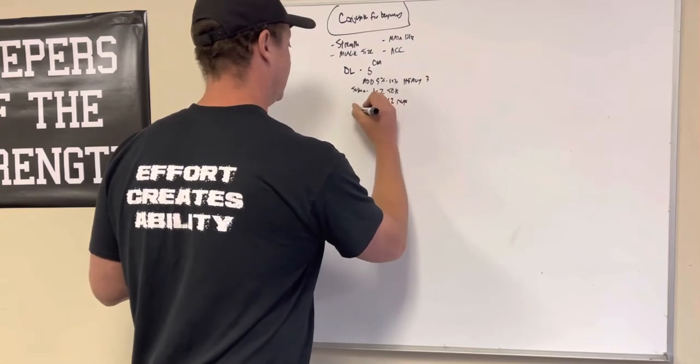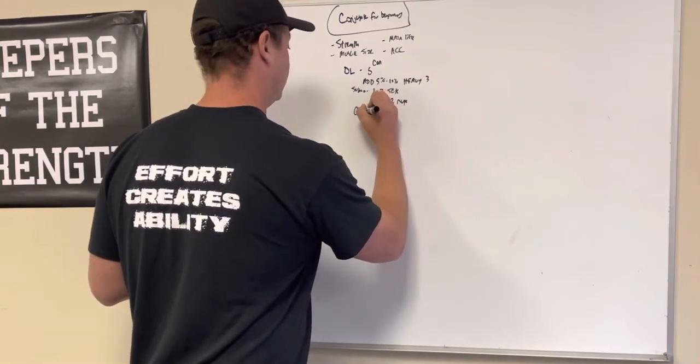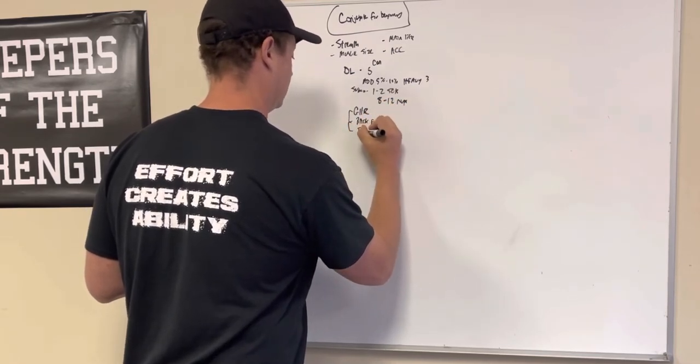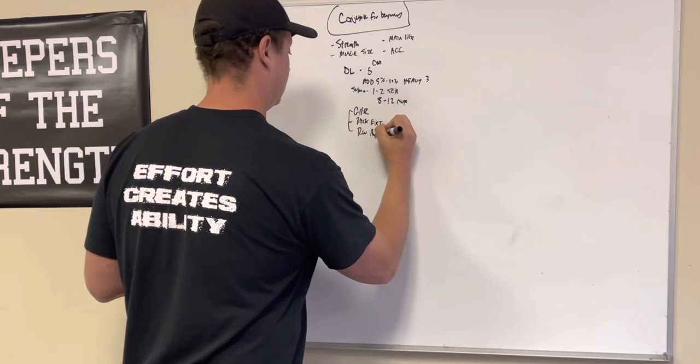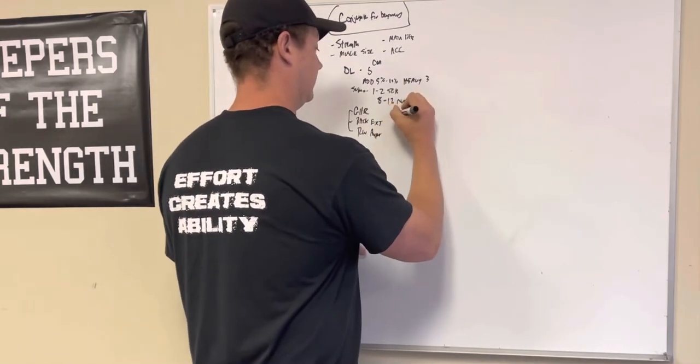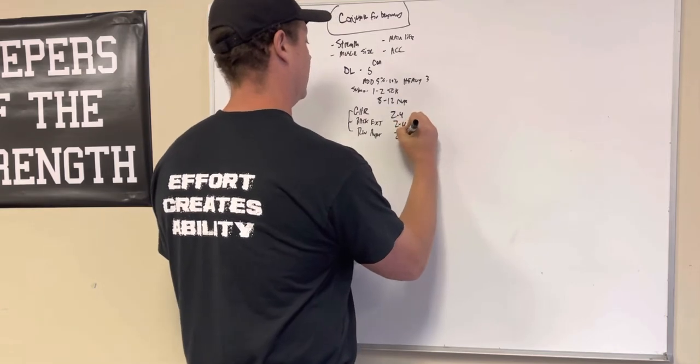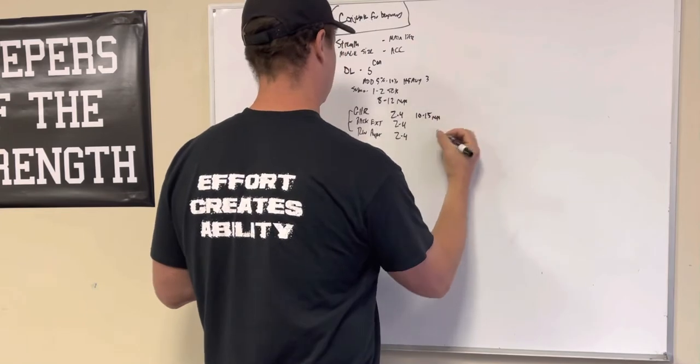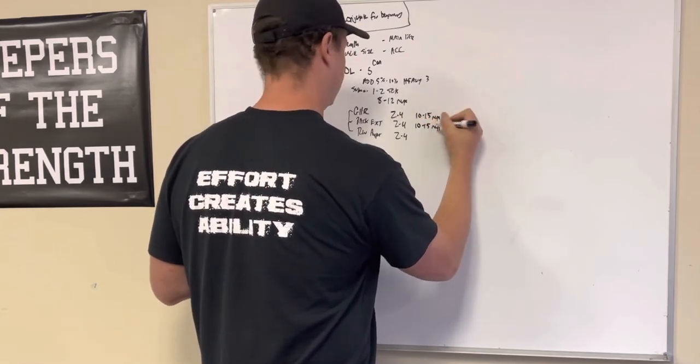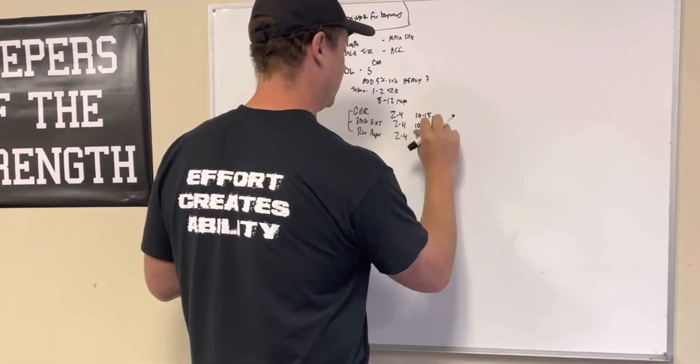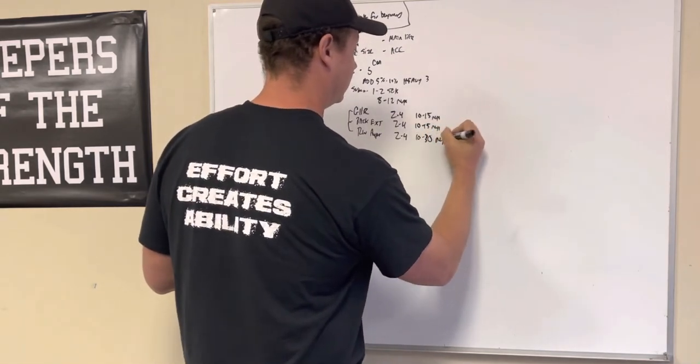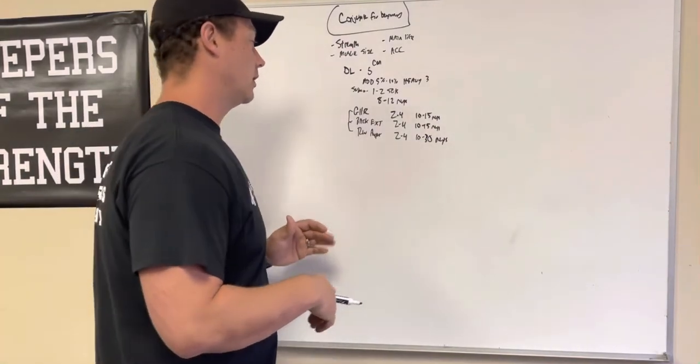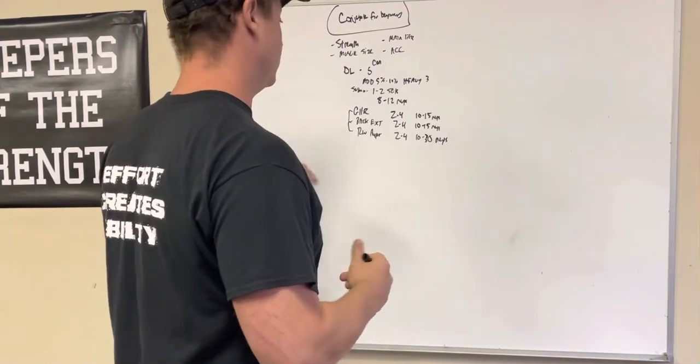Then we get into accessories, and this is where we're going to push the volume a little bit more. So we might go GHR, back extension, reverse hypers. So we'll say two to four sets on each exercise. GHR, 10 to 15 reps. Back extension, 10 to 15 reps. Hypers, 10 to 30 reps. I generally like to keep the hypers in a higher rep range, and that all depends on your skill level, your training level.